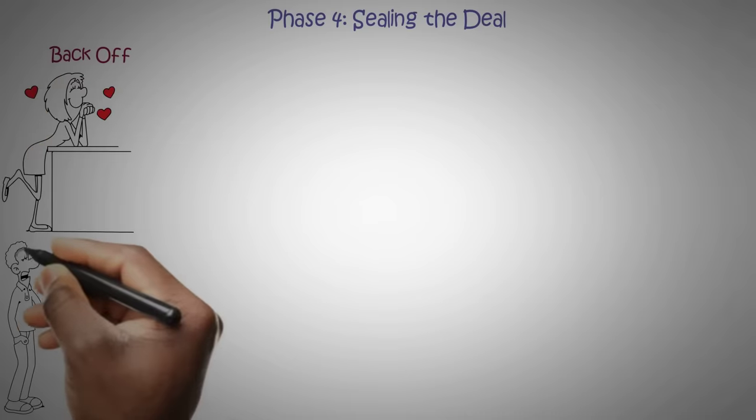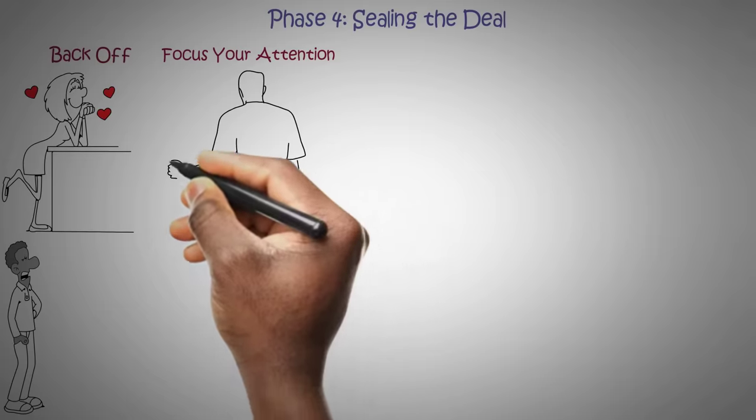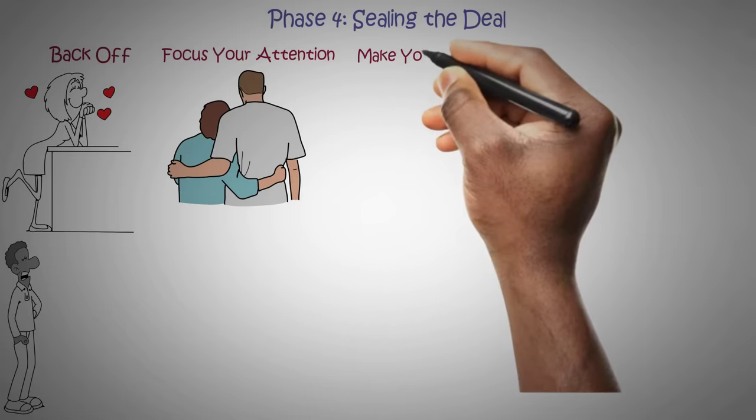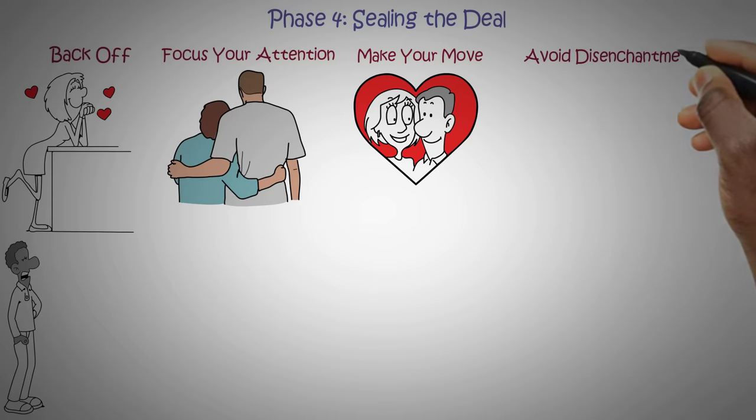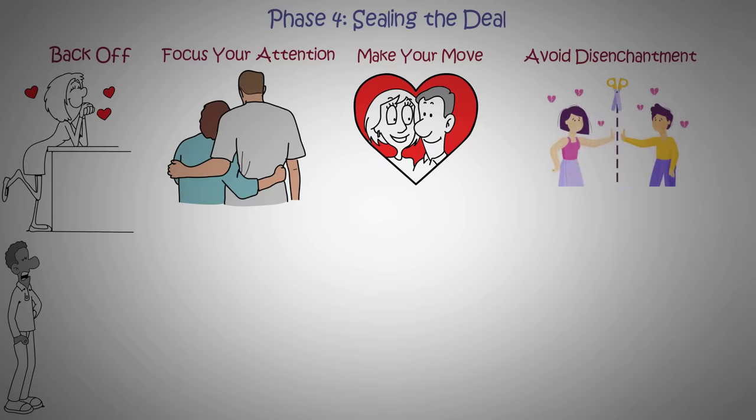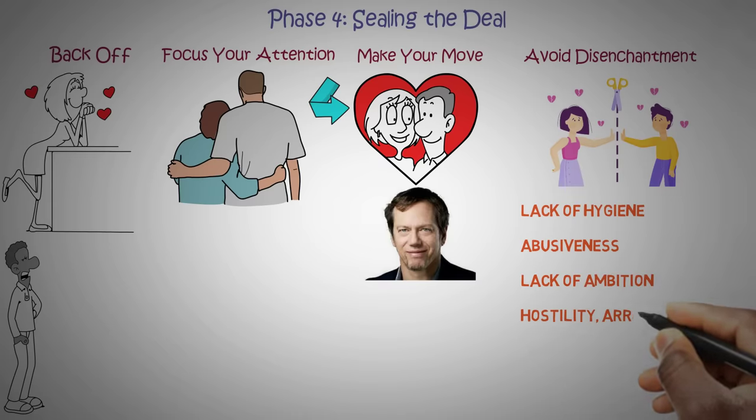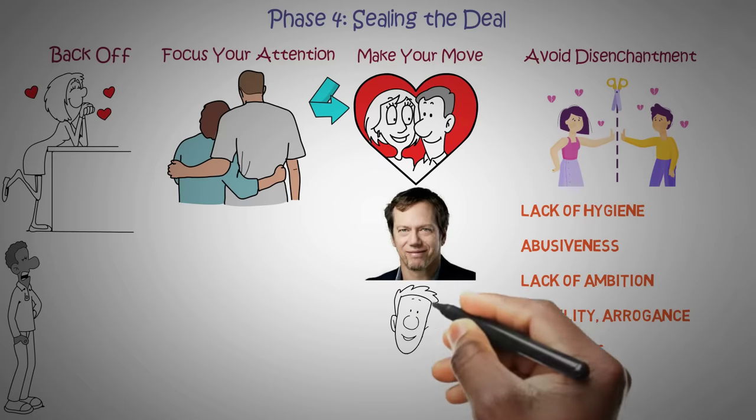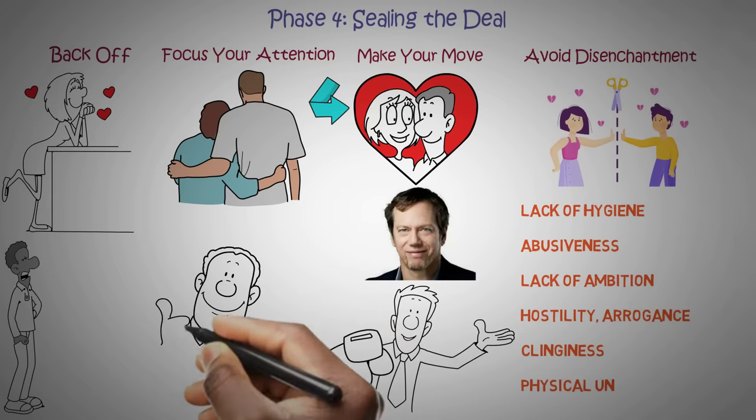Phase Four: Sealing the Deal. Finally, bring the seduction to its conclusion. One: Back off. Wait until they desire you intensely, then act disinterested briefly to make them pursue you. Two: Focus your attention. When together, give them your undivided attention and use seductive body language. Three: Make your move. Create the perfect setting for the final move of your seduction. Four: Avoid disenchantment. Depending on your goal, either end it confidently or maintain the seduction cycle. Greene mentions other traits that can be a major turnoff, which are lack of hygiene, abusiveness, lack of ambition, hostility, arrogance, clinginess, and physical appearance. Remember, these techniques can be used for various purposes beyond romance.